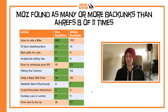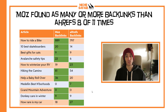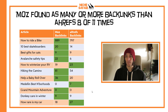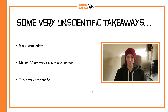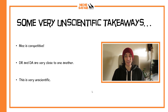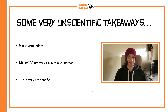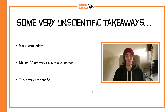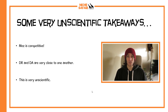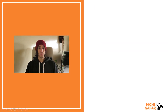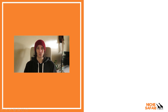So Moz really held its own, and I was really surprised — I expected it to be absolutely blown out of the water by Ahrefs because everyone says Ahrefs has the better crawler, but in this little case study that wasn't the case. Moz did well. Very unscientific takeaways: Moz appears to be competitive with Ahrefs, and DA and DR are very close to one another. When someone says DR, you can pretty much assume DA is going to be around about the same. Thanks for watching, and leave a comment below if you have any questions.